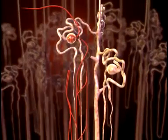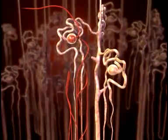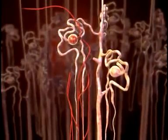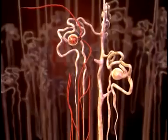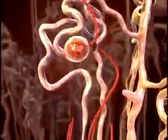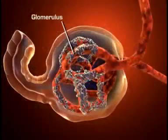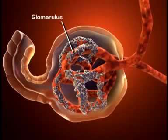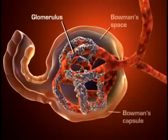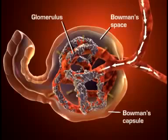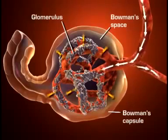Each nephron consists of a glomerulus and a system of tubules. The glomerulus is a unique, high-pressure mass of capillaries that filters the blood. The glomerulus is encased in a thin, double-walled capsule called Bowman's capsule.